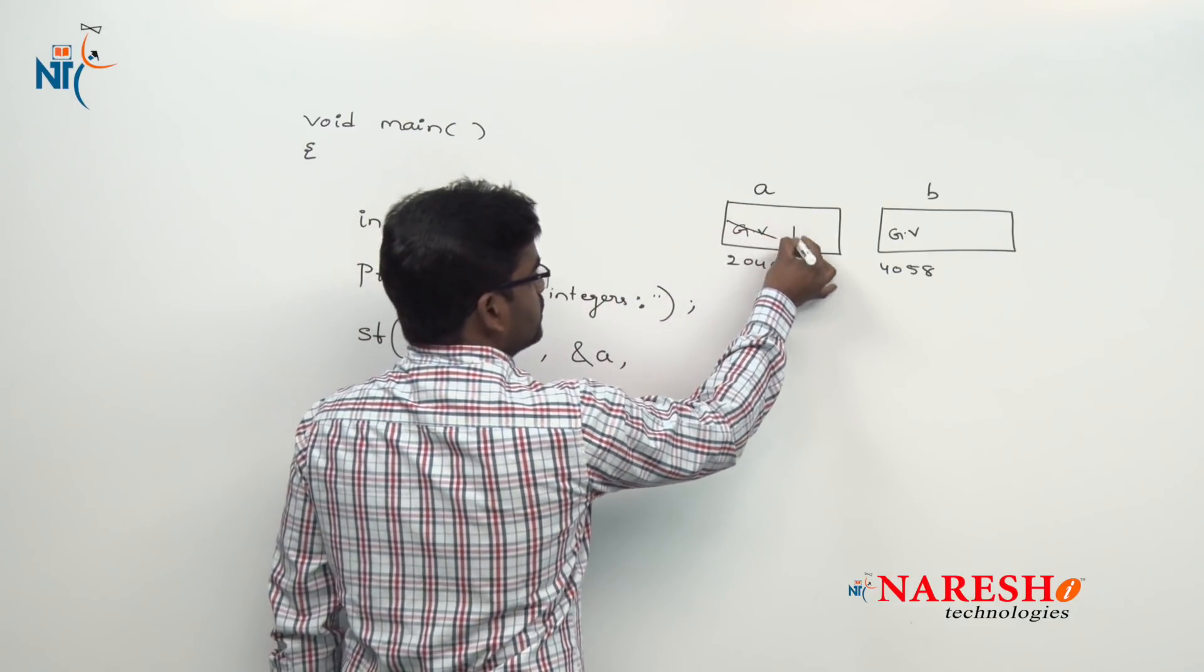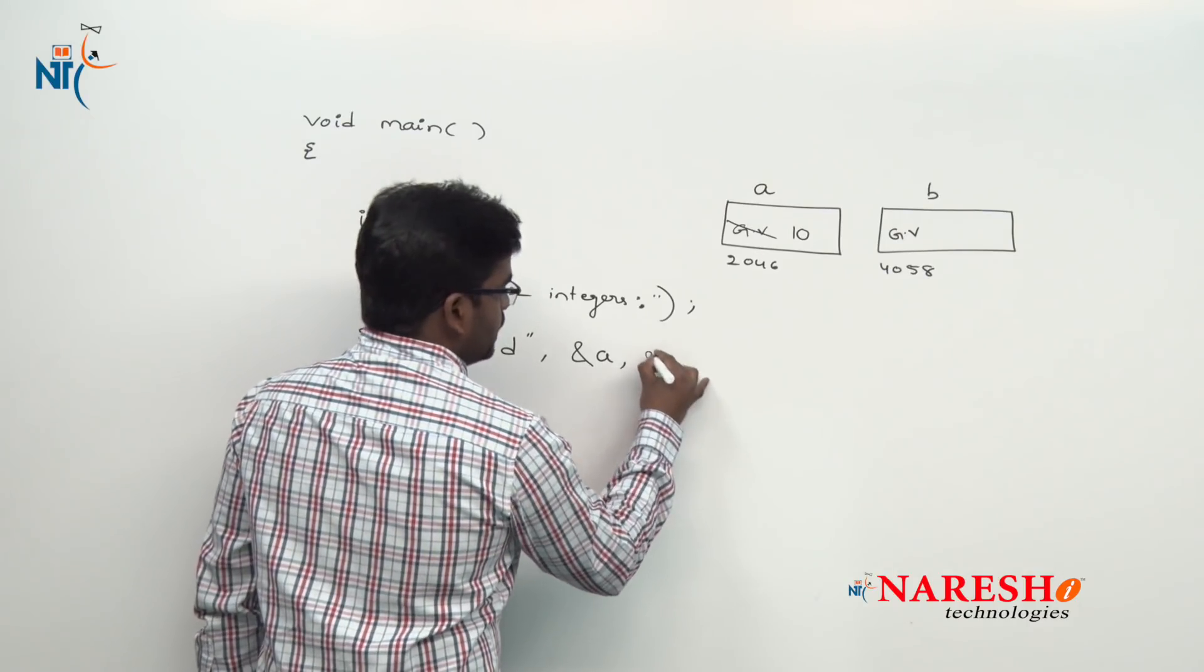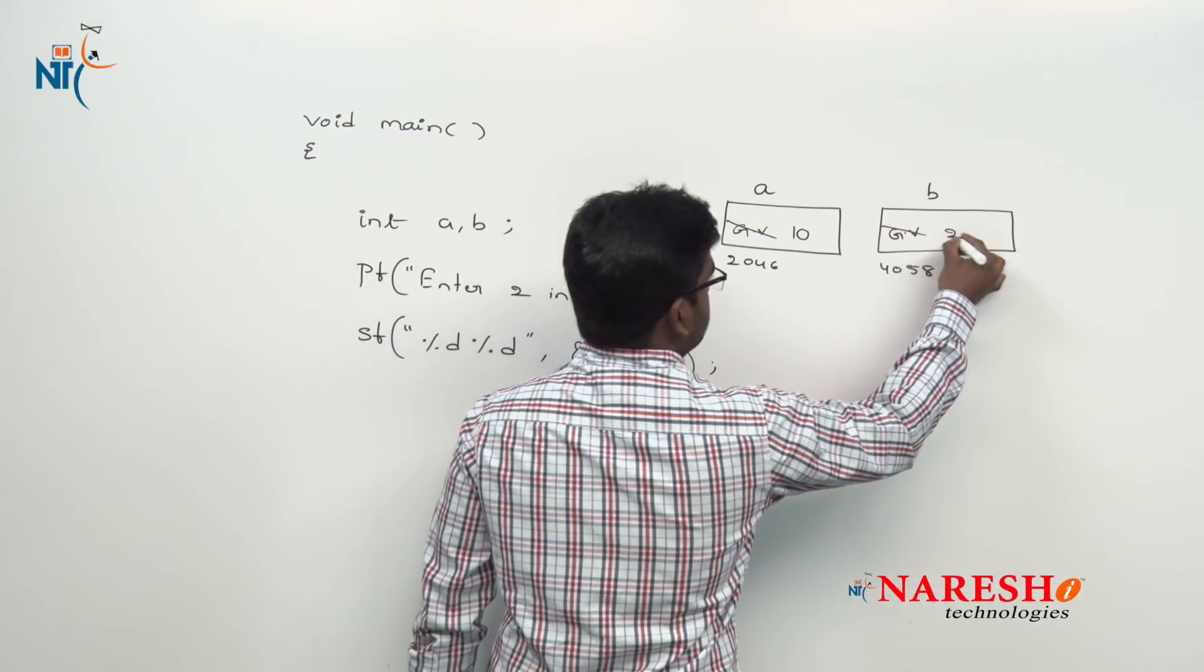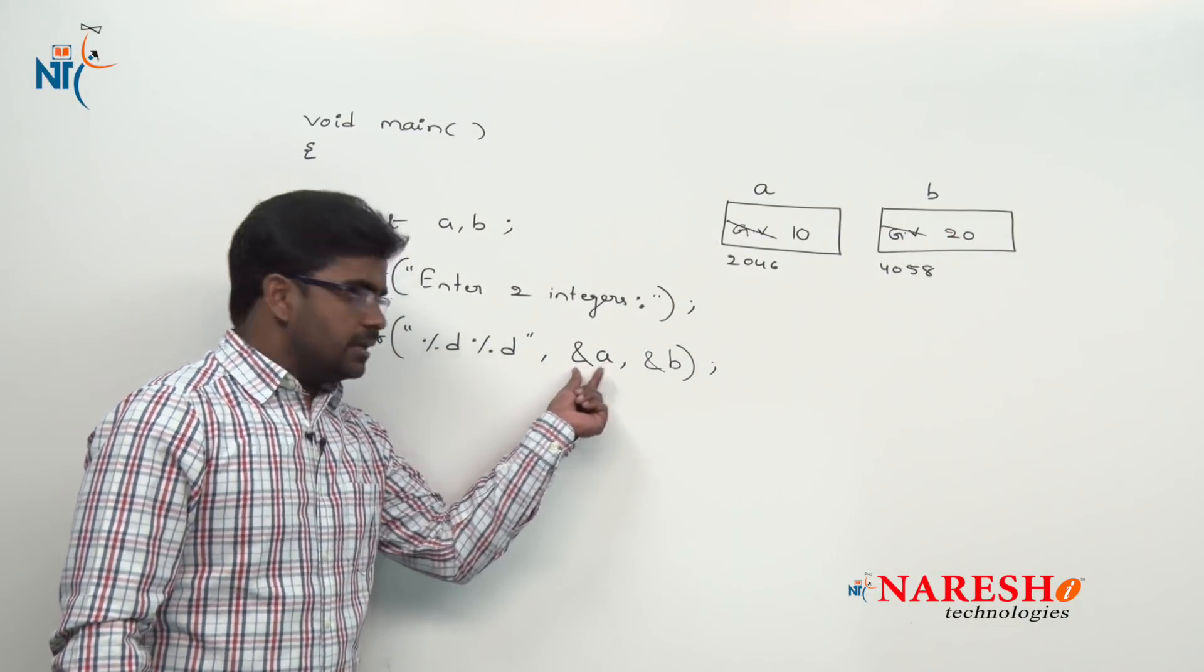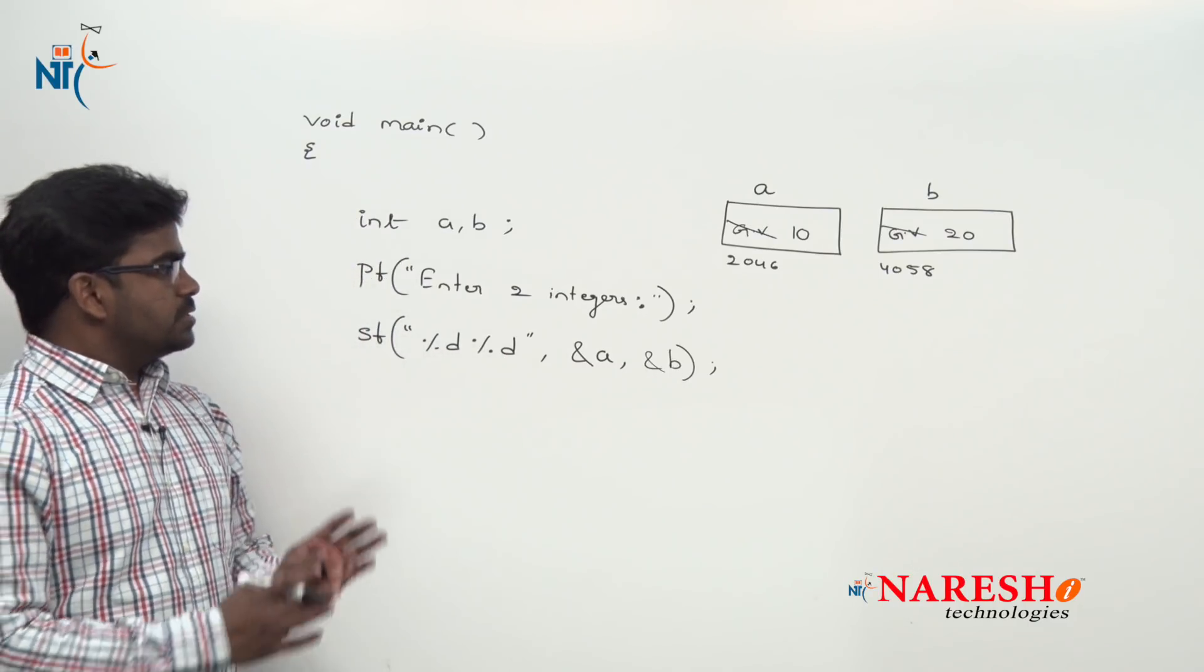Second one into address of b, into that second location it is 20. The first integer will be collected into that location a, that second integer will be collected into location b. This is reading.